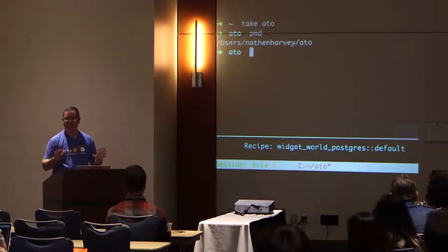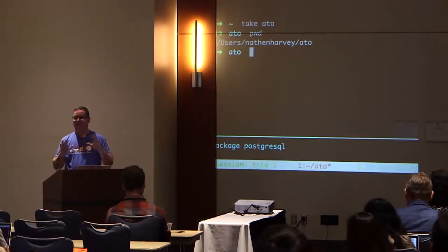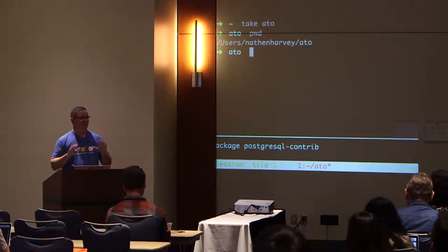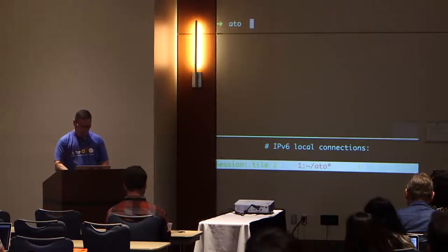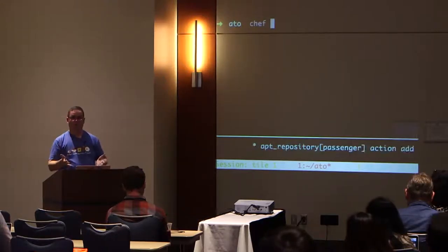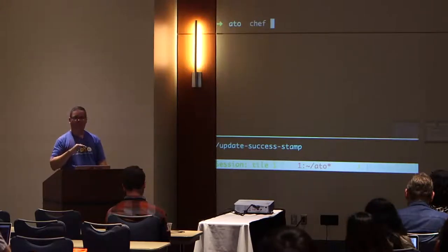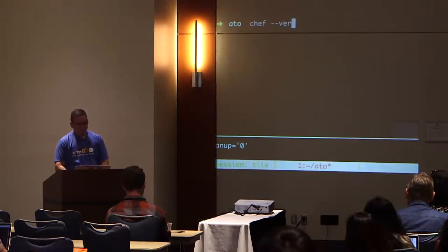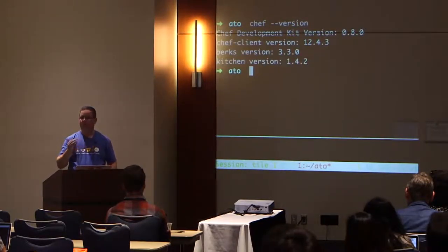But we're not here to learn crazy shell tricks — we're here to learn about testing your infrastructure code. When I'm creating stuff with Chef, I want to put all of my code into a repository. Chef has a command line tool called 'chef.' If I run 'chef --version,' we'll see I'm running locally the 0.8.0 version of the Chef Development Kit. This is not the latest version — I intentionally haven't used it because I know 0.8.0 will work.